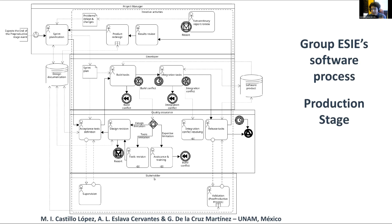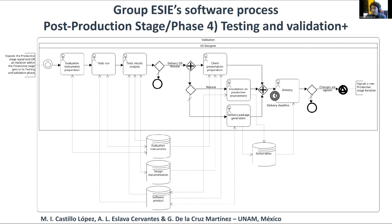On the final iteration, this validation task extends itself into the final process stage. As stated before, the testing and validation phase is shared between the production and post-production stages.